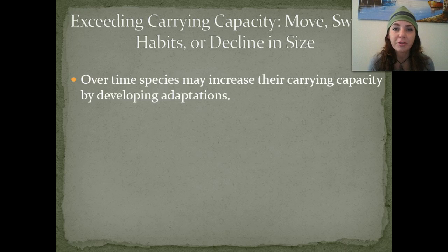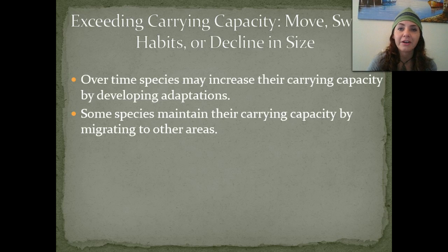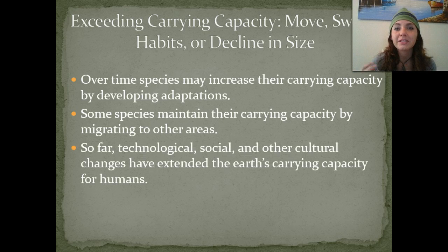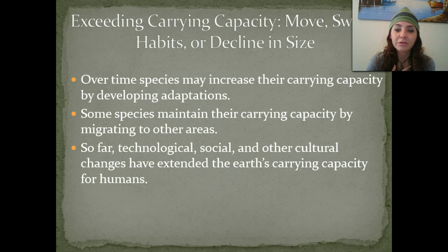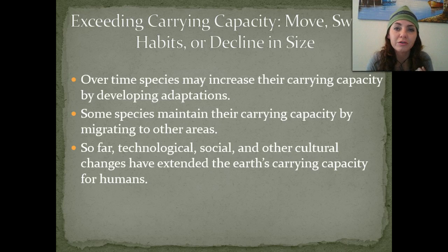Sometimes we'll see a population switch habitats or decline in size. Over time, species may increase their carrying capacity by developing different adaptations to their environment, or maintain it by migrating to other areas — if there's less food or water in one place, that population may move. For us as people, technological, social, and other cultural changes have extended the Earth's carrying capacity, because with all our technology we can live in environments most other organisms couldn't adapt to, such as using heaters and clothing in very cold areas.